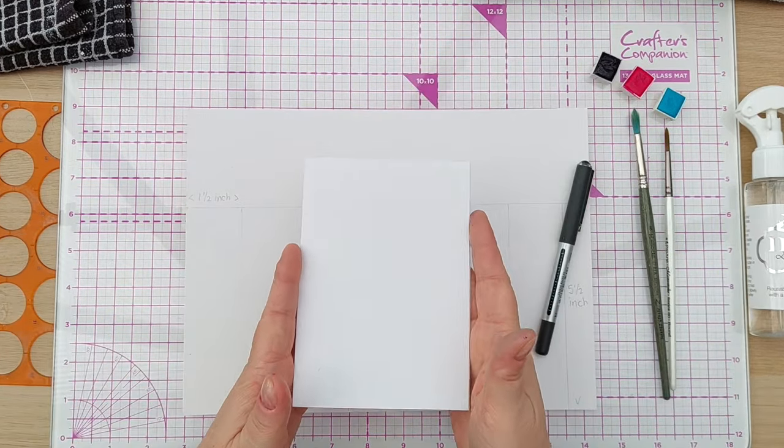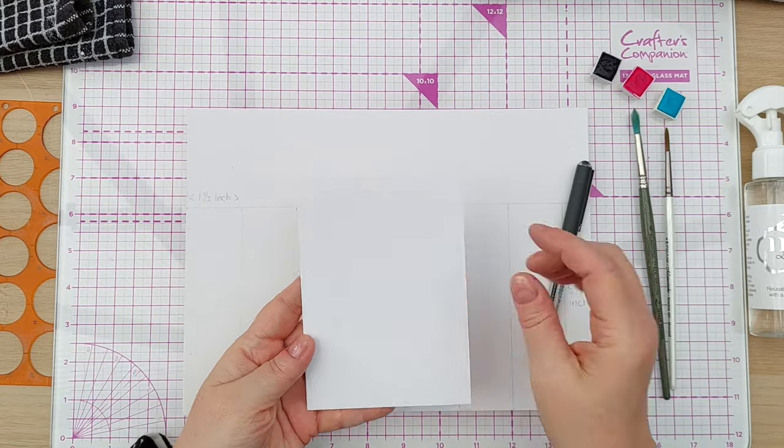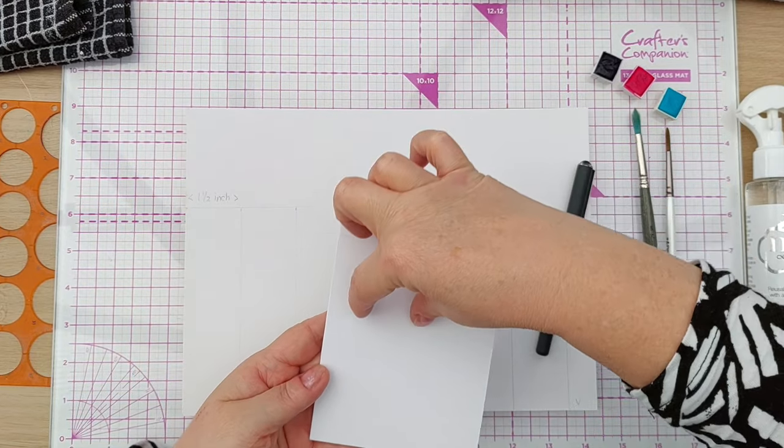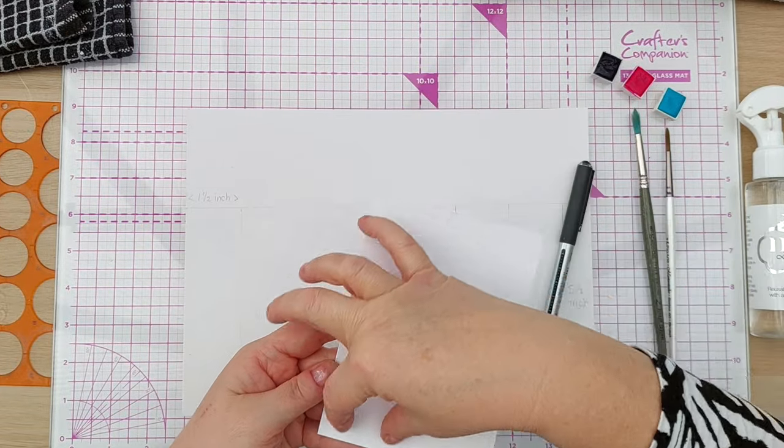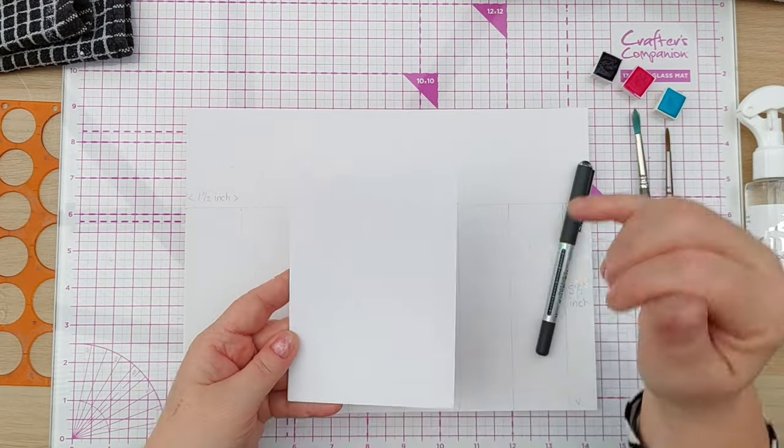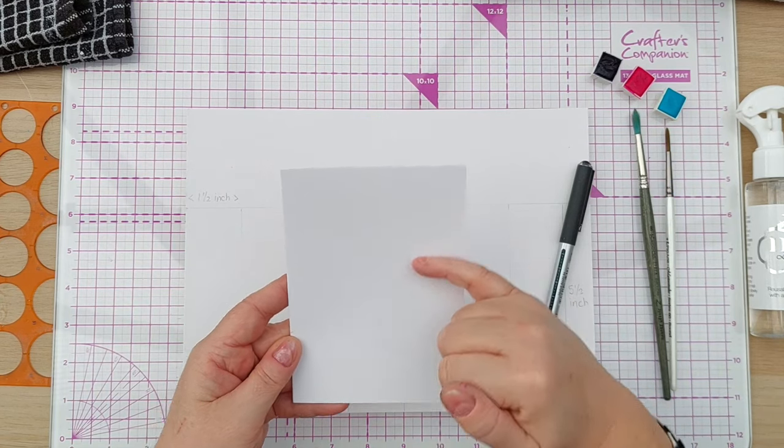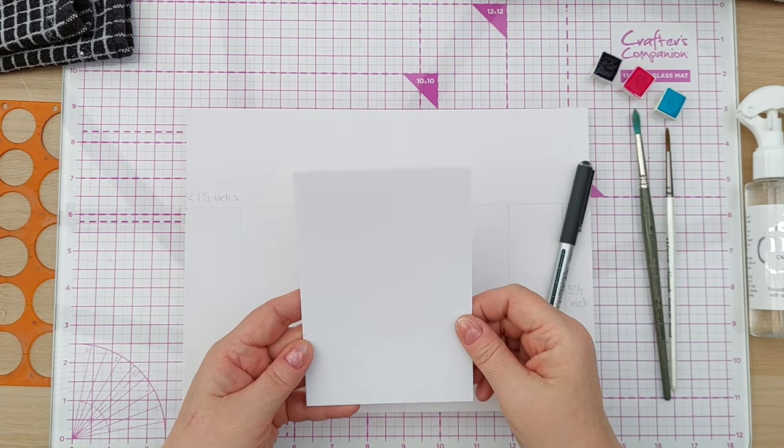I'm going to do a 4x6 card and I'm going to create a slim panel that's one and a half inches wide on the side here, and then add a sentiment somewhere on this side, Merry Christmas or something like that.